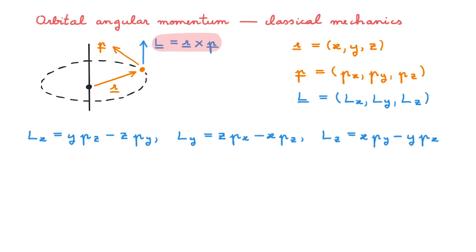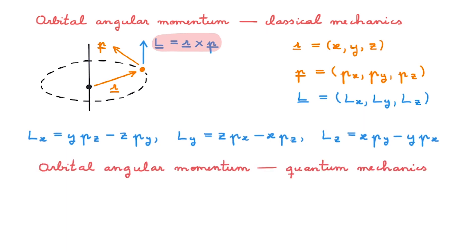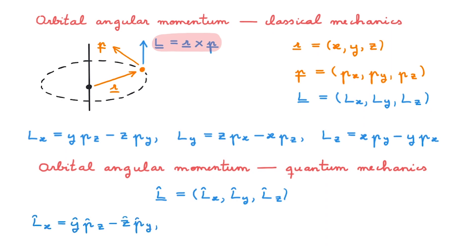From the introductory video on angular momentum, which you can find linked in the description, we know that orbital angular momentum in quantum mechanics arises by simply promoting the classical quantities to the corresponding operators. That means that we can write lx as equal to ypz minus zpy, and similarly for ly and for lz. We don't need to worry about the order of the products, because they all contain position and momenta along different Cartesian axes, which means that they all commute.